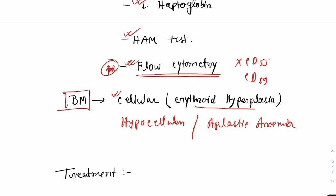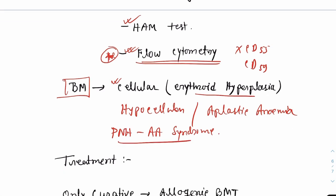There is also something known as PNH and AA syndrome. That is the combination of paroxysmal nocturnal hemoglobinuria and aplastic anemia.